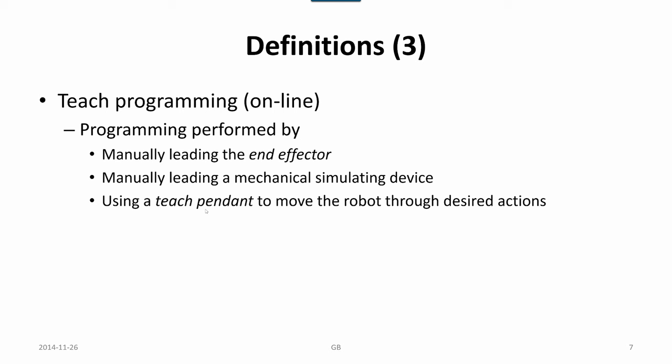I would say that teach pendant is the normal way to program robots using the online methodology. But for certain cases, there are manual leading the end effector like for spray painting. And there are systems which incorporate the ability to do some fine-tuning or touch-up of orientations, poses, by dragging and leading the robot and touching up what is programmed beforehand. So that could be a combination of these things.